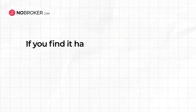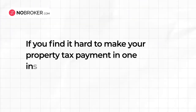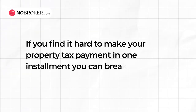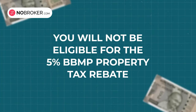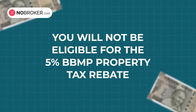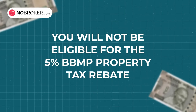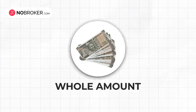The penalty or fine is calculated at the rate of 2% extra on your property tax per month. If you find it hard to make your payment in one installment, you can break it into two — however, by doing so you will not be eligible for the 5% BBMP property tax rebate.